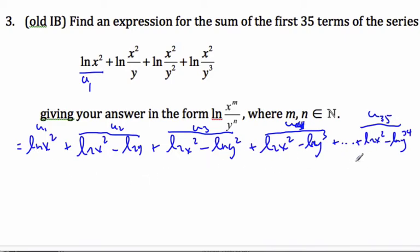I have to add up all these terms. Let's do some clever thinking here and rearrange this. If I think about my ln x squared, I know I'm going to have 35 of them. I'm going to add up all 35 ln x squared. So I have 35 ln x squared.